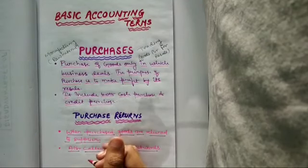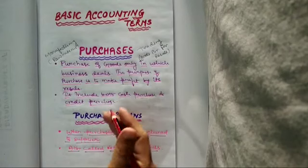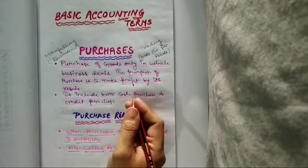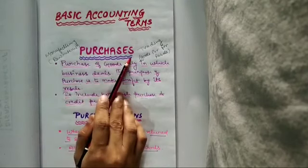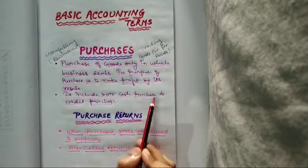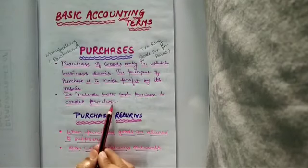That is called a credit purchase, कि हम जब purchase करें और payment अभी ना करकर किसी future date पर हम payment करें तो that is called a credit purchase. तो purchases include both cash purchase as well as credit purchase.